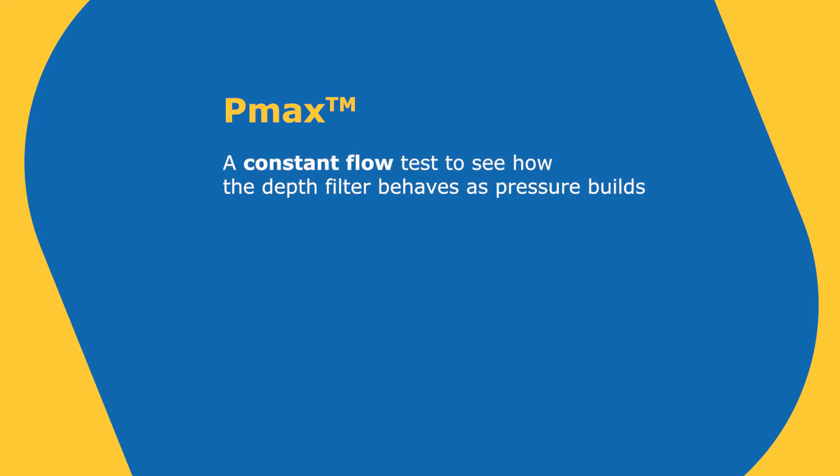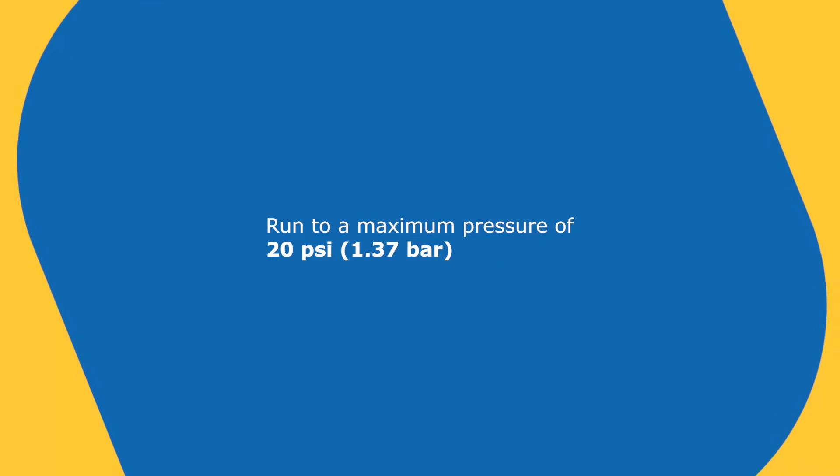A PMAX experiment is a constant flow test where you're running at continuous flow rate, and you're going to collect information to see how the depth filter behaves as it builds up pressure. So you want to run it to a maximum pressure of 20 psi, and you would be collecting data that I'll discuss later in the video.